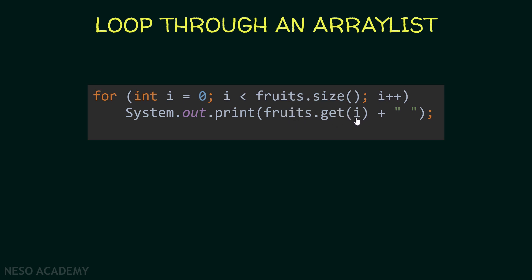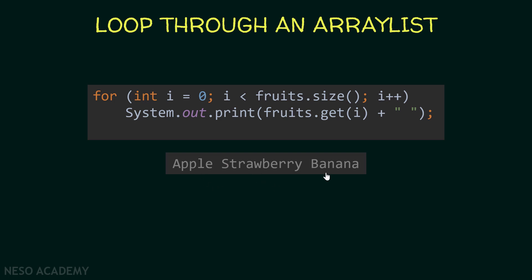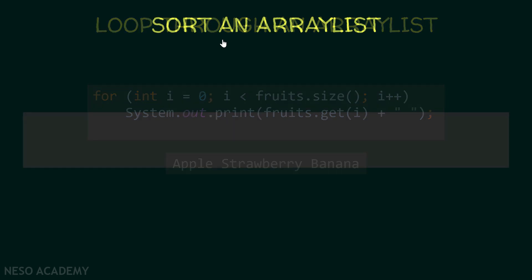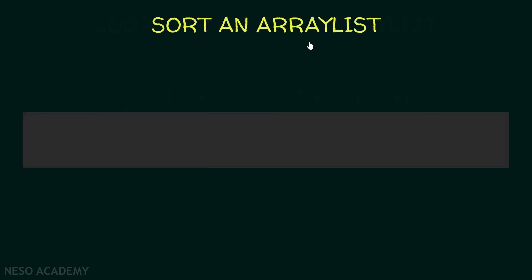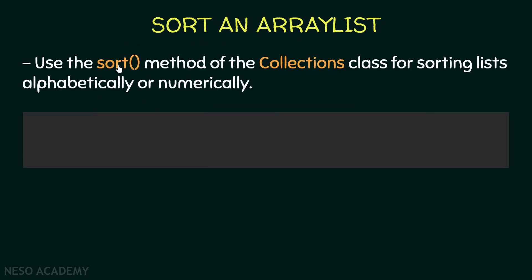We are printing the element at index i concatenated with a space. This will be the output — our fruits ArrayList has three elements and they are printed as you can see. Now let's talk about sorting an ArrayList. To sort an ArrayList we are going to use the sort method of the Collections class, which can sort lists alphabetically or numerically. An ArrayList is a list, so this applies to it.